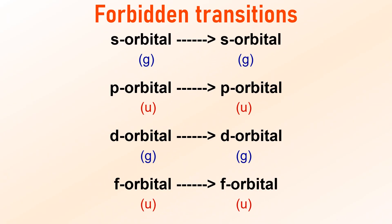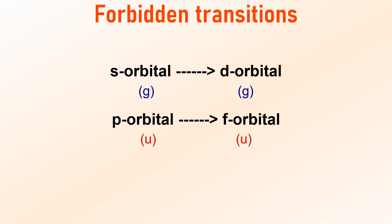According to the Laporte rule, electronic transitions between orbitals of the same type are forbidden because they have the same parity. For example, transitions between two S orbitals are forbidden since both are symmetric with respect to the centre of inversion. The transition between two P orbitals is also forbidden since they have the same parity. Similarly, the transition between an S orbital and a D orbital is forbidden as both are gerade in parity. Likewise, the transition between a P orbital and an F orbital is also forbidden since both are ungerade orbitals.